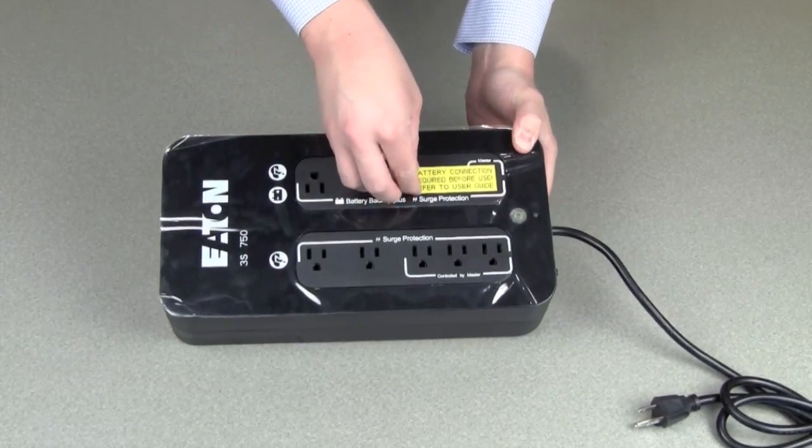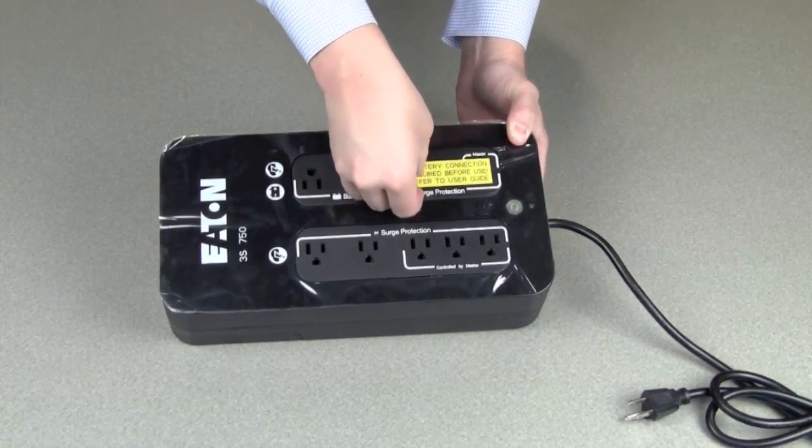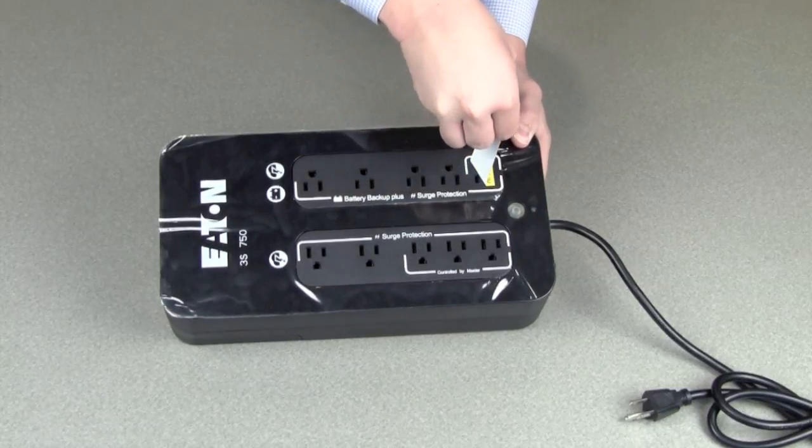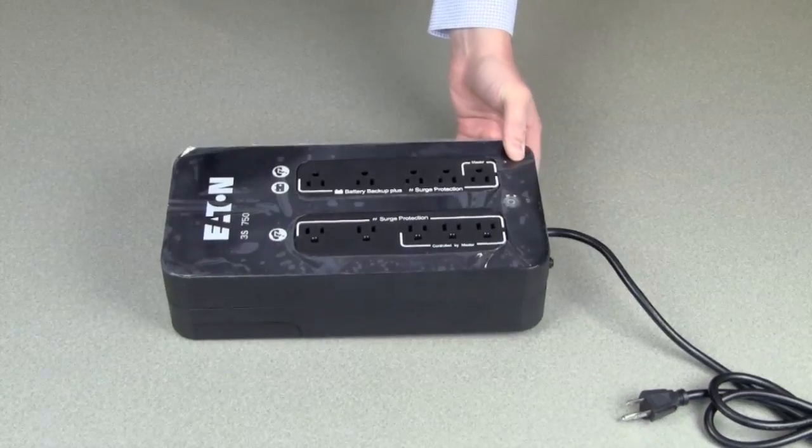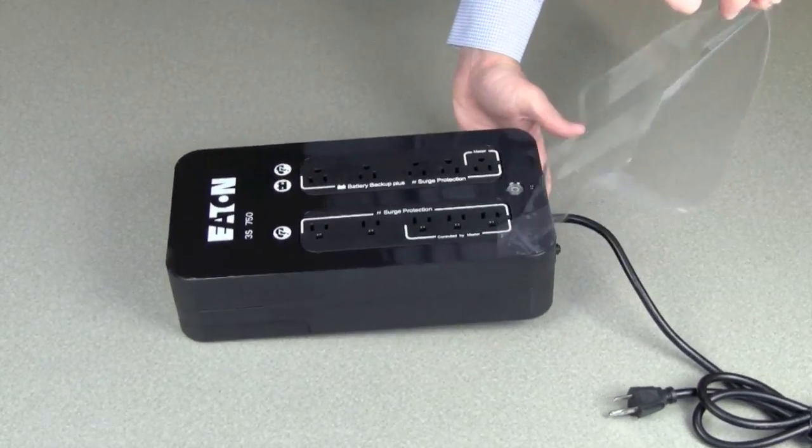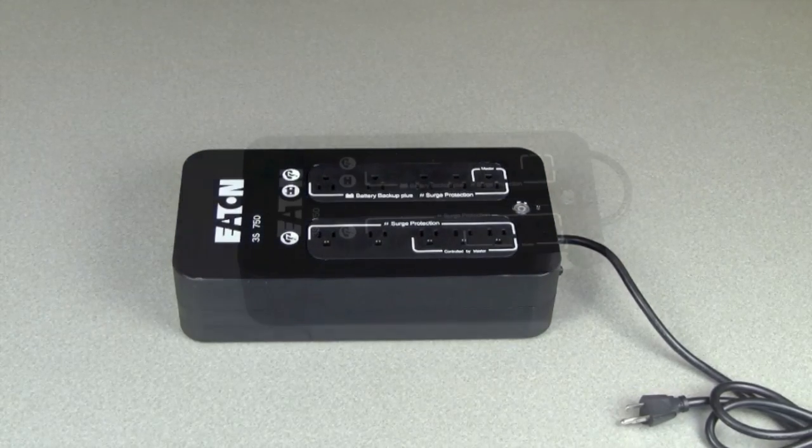This will expose the three remaining outlets on the 3S UPS. This UPS does have a total of 10 outlets, five on each bank. One bank is battery backup and surge protection, and the other five are simply surge protection. This is also a great time to remove the protective film covering the glossy cabinet surface, and our 3S UPS is ready to go.